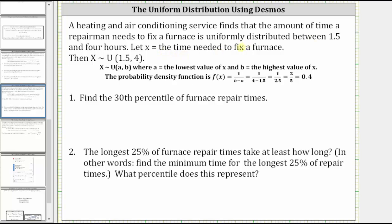Because we have a uniform distribution, we can use this notation where 1.5 is the lowest value of x and four is the highest value of x. The probability density function is f(x) equals one divided by the quantity b minus a, where b is the highest value and a is the lowest value, giving us f(x) equals one divided by 2.5, which can also be expressed as two-fifths or 0.4.